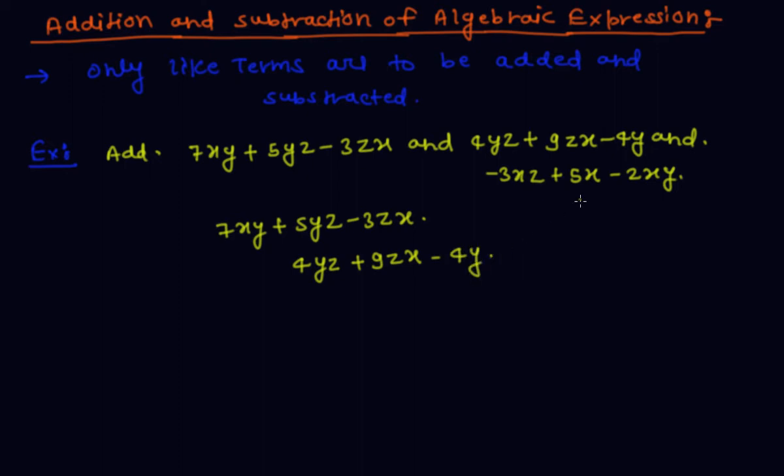Again, minus 3xz is written below with like terms, plus 5x and minus 2xy. Minus 2xy is written below 7xy because 7xy and minus 2xy are like terms.